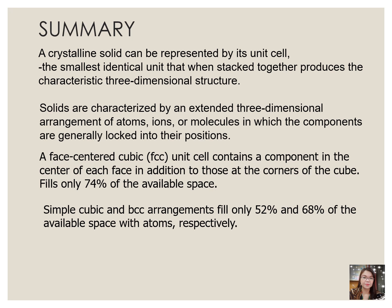And to summarize the first part of the BG lecture for crystalline solid structure: a crystalline solid can be represented by its unit cell, the smallest identical unit that, when stacked together, produces the characteristic three-dimensional structure. Solids are characterized by an extended three-dimensional arrangement of atoms, ions, or molecules, in which the components are generally locked into their positions. A face-centered cubic, or FCC, unit cell contains a component in the center of each face, in addition to those at the corners of the cube. It fills only 74% of the available space. Simple cubic and BCC arrangements fill only 52% and 68% of the available space with atoms, respectively.